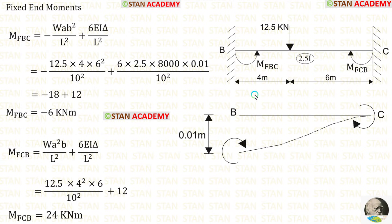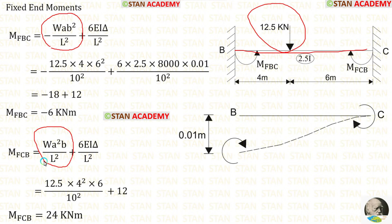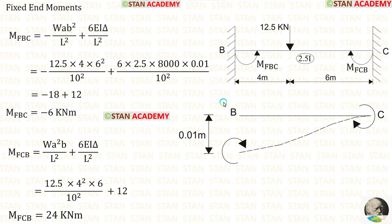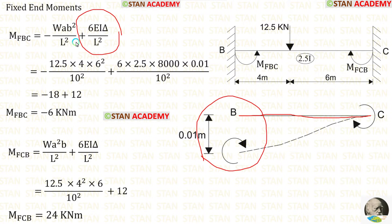Now let us find the fixed end moments in span BC. In span BC, there is an eccentric point load of 12.5 kN. The formulas are −WAB²/L² and +WA²B/L². Since support B is sinking, we also need the fixed end moment due to sinking. For span BC, sinking occurs on the left side, so the fixed end moments due to sinking will be positive.